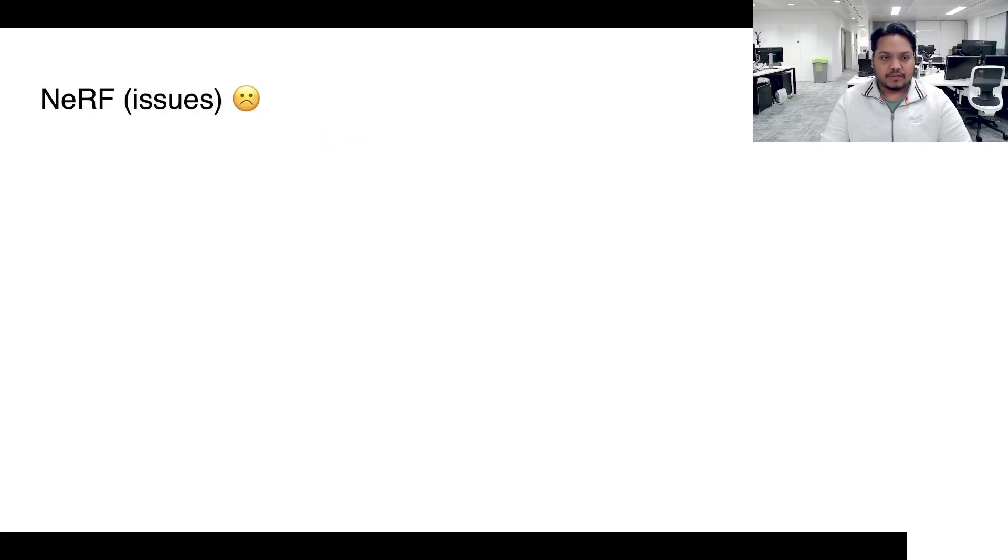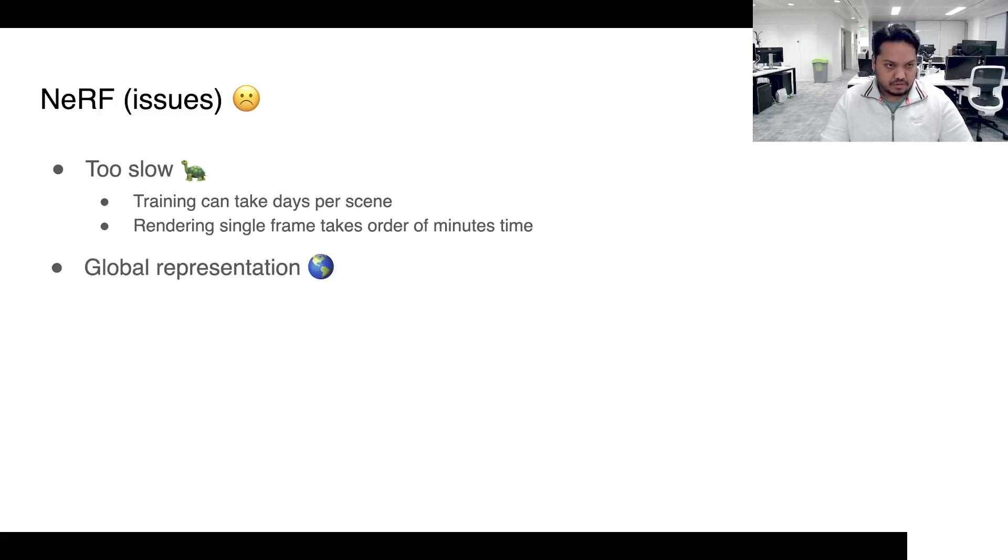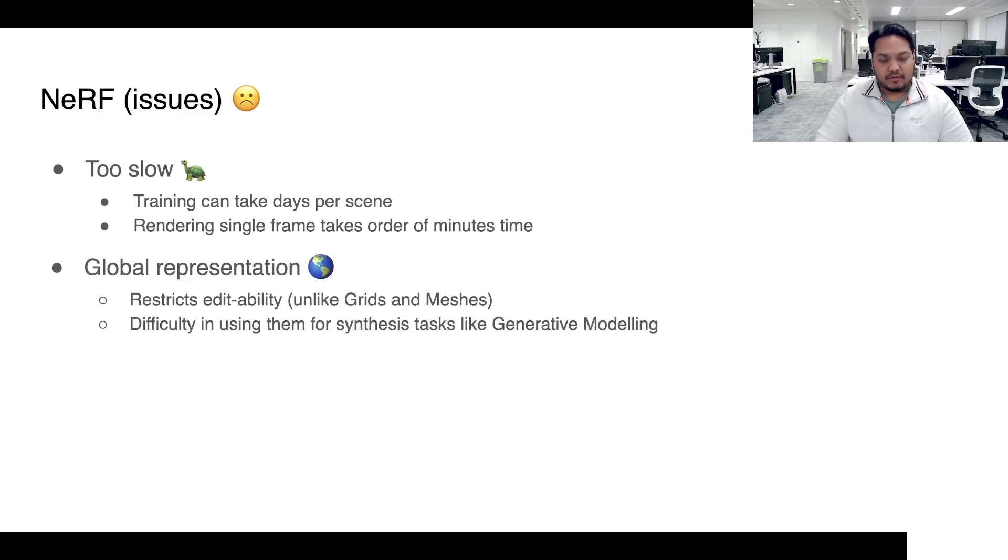To talk about some issues with NeRFs in detail, as alluded to earlier, apart from the sort of slow training and rendering, another issue with MLPs is that they are basically an intricate box of enigmatic connections, which implies that any edits made to the weights of the MLP locally may have global effects on the content of the scene, which restricts the editability. And the weight encoding also makes this representation difficult to use for synthesis tasks like generative modeling.